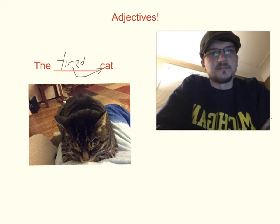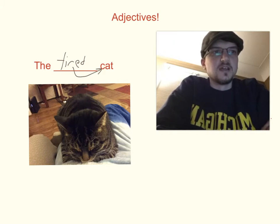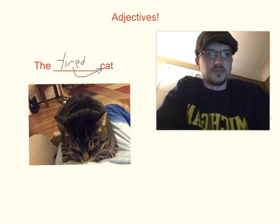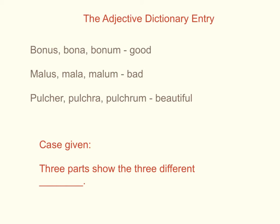In Latin it's going to be a tiny bit more complicated, but not too much — as long as you know your cases, gender, and number you should be fine. With that in mind, let's get started. We're going to begin by looking at a couple of dictionary entries of adjectives in Latin. We see here: bonus, bona, bonum — good; malus, mala, malum — bad; pulcher, pulchra, pulchrum — beautiful.